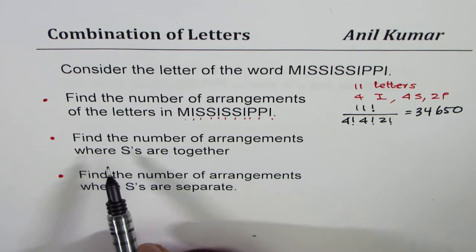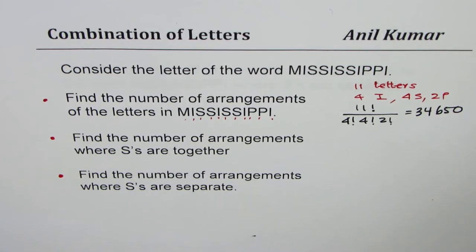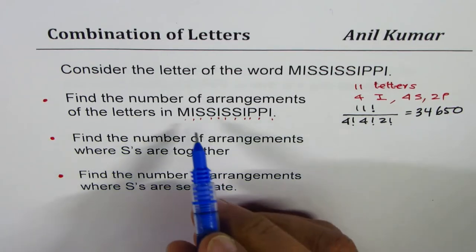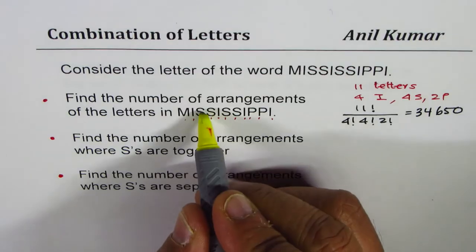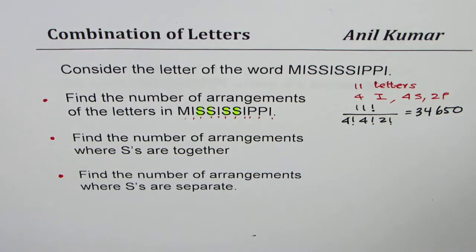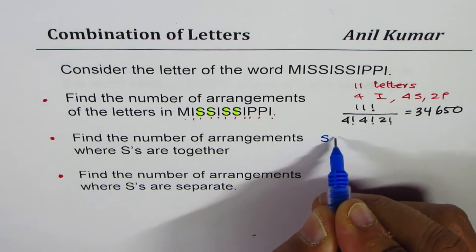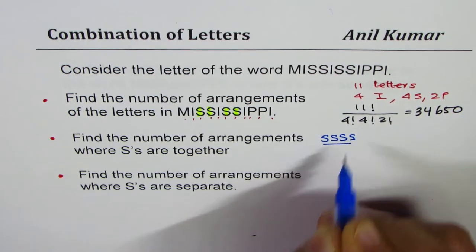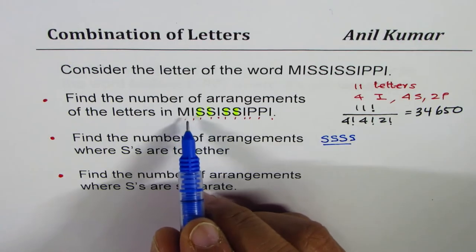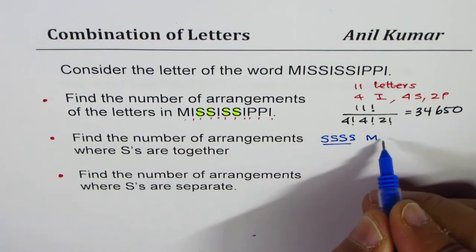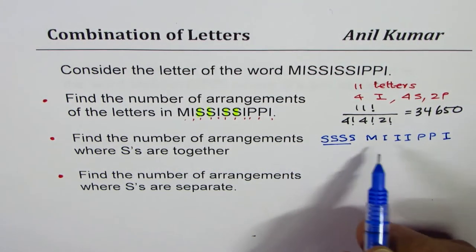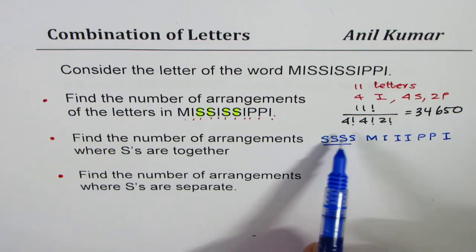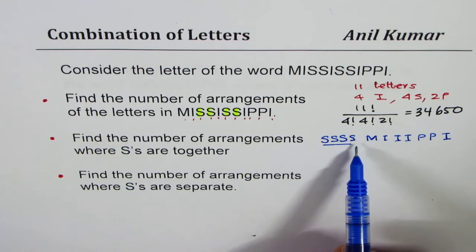The next question: find the number of arrangements where S's are together. That's kind of tricky. When we want to put S's together, we rearrange so that we take away these S's and group them together as one unit — all 4 S's occupying one space. The rest of the letters are M, and three I's and 2 P's. So we treat all S's as one particular group.